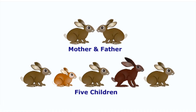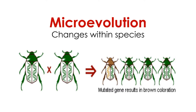Over generations, populations evolve, and the observable characteristics and genetic material change. Scientists distinguish between two levels of evolution. The lower of these levels is called microevolution — evolution within species. It includes all of the changes in the observable characteristics and genetic material of a population from one generation to the next.